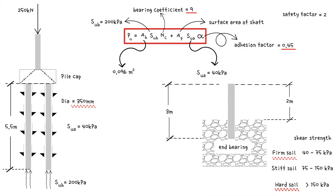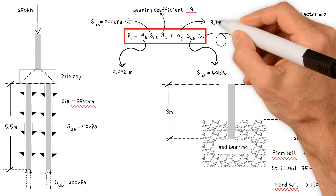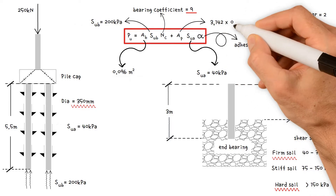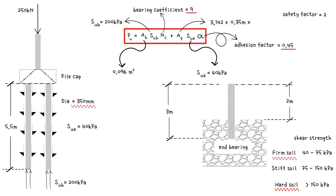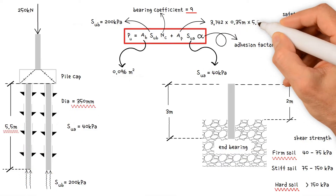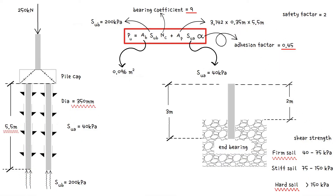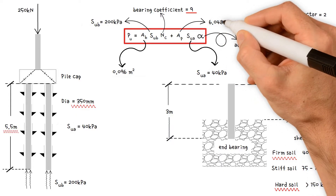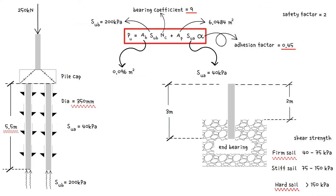Next, we work out the surface area of the shaft, which is π × pile diameter 0.35 m × pile length 5.5 m. This corresponds to a value of 6.0484 m².